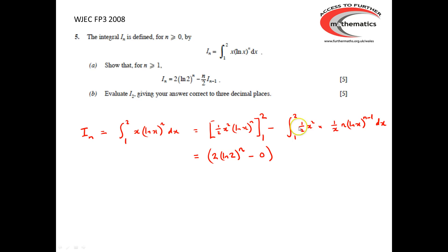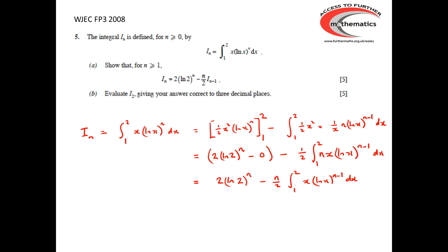Looking at this part, we've got half x squared times 1 over x, which simplifies to a half x. The half can come outside the integral. So we've got x times n times ln(x) to the n minus 1. We can pull the n outside the integral as well. We then notice that the integral we've got here is precisely I_{n-1}. So we've now established the recurrence relationship: I_n equals 2 lots of ln(2) to the n, take away n over 2 times I_{n-1}, as required.